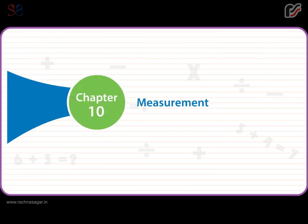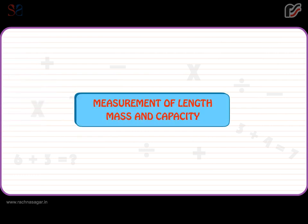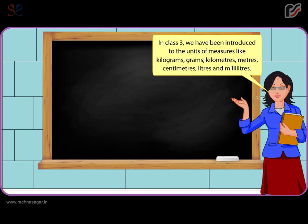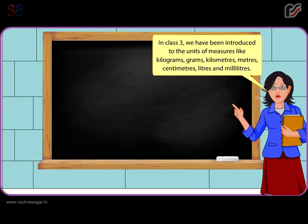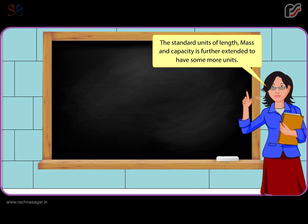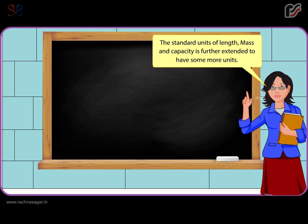Chapter 10: Measurement of Length, Mass, and Capacity. In Class 3, we have been introduced to the units of measures like kilograms, grams, kilometers, meters, centimeters, liters, and milliliters. The standard units of length, mass, and capacity are further extended to include some more units.